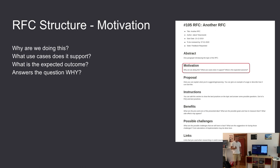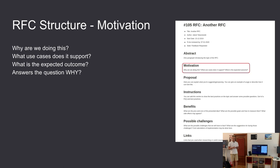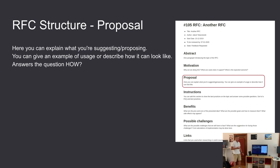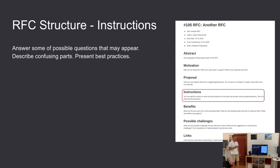The abstract is followed by motivation, which should be a little longer and answer the question 'why do we need this in the company?' It should describe why we are doing this — it's a really important part because thanks to it people may understand the need for the change. Another important part is the proposal, which is the main part of the RFC. It describes how you would like to implement the idea and what it will actually be, so you describe the whole implementation plan. The next section is instructions — it doesn't have to be in every RFC, but in most it will be welcomed; you can present best practices there.